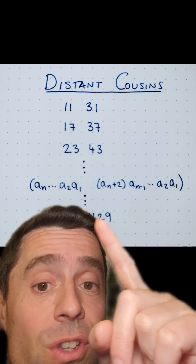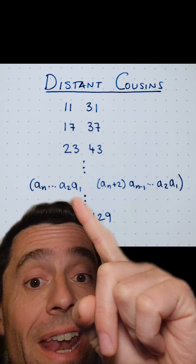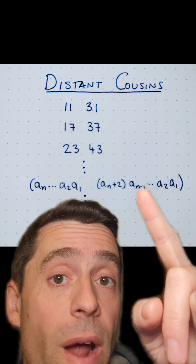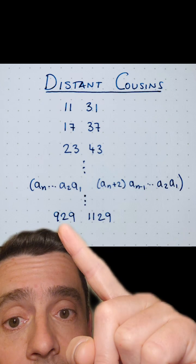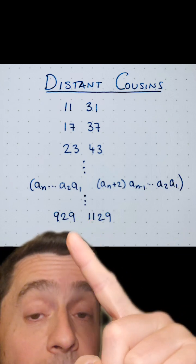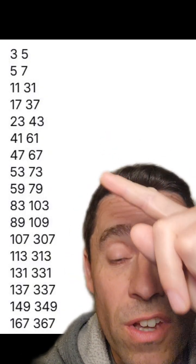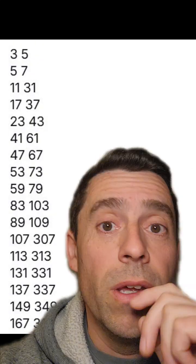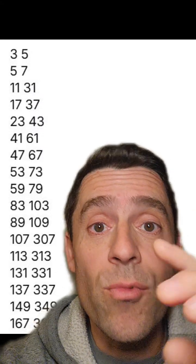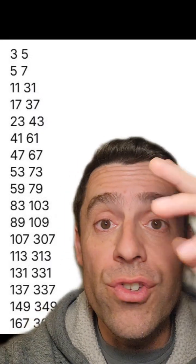So 2 primes in base 10 are distant cousins if this is their expansion in base 10 and you add 2 to the most significant digit A1 — and if this resulting number is also prime, then these are distant cousins. Again, you have to be careful that if A1 is a 9, there might be some carryover. There seem to be a lot of distant cousins. Here are the first few, and the list continues. I've looked up this kind of sequence and it doesn't seem to show up in the Online Encyclopedia of Integer Sequences.